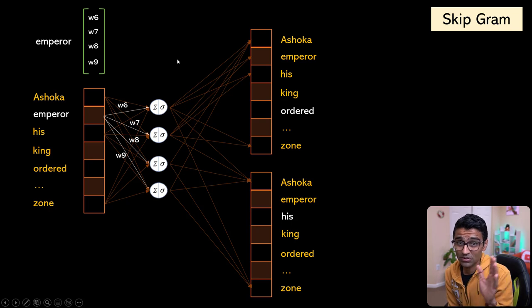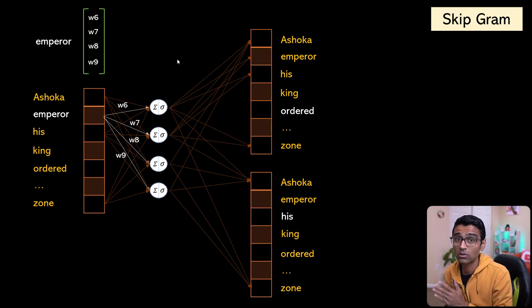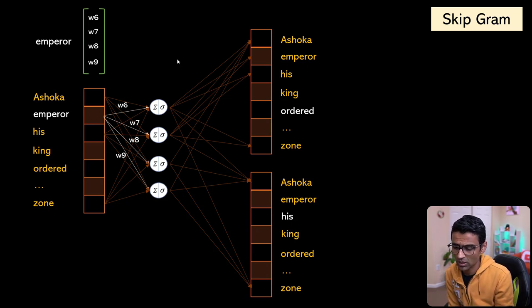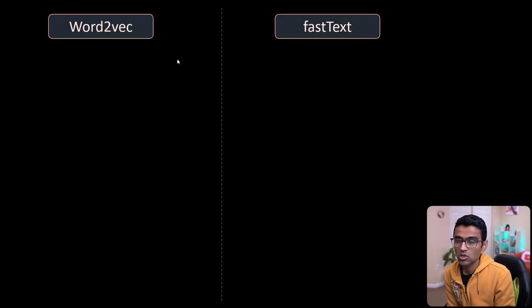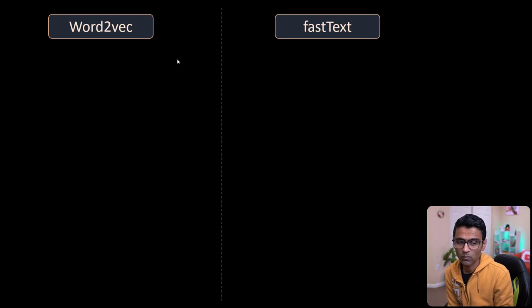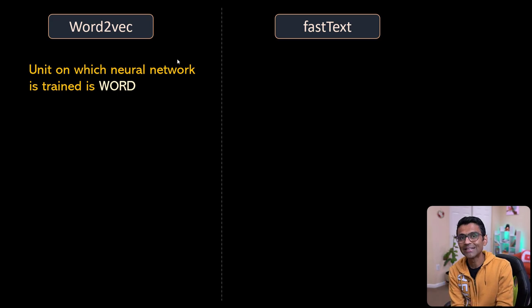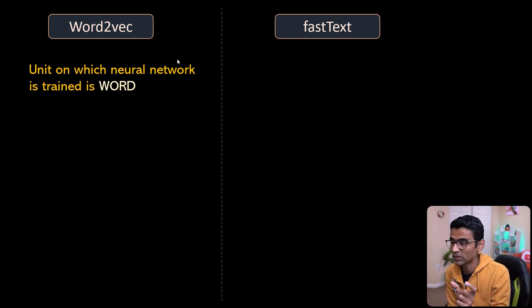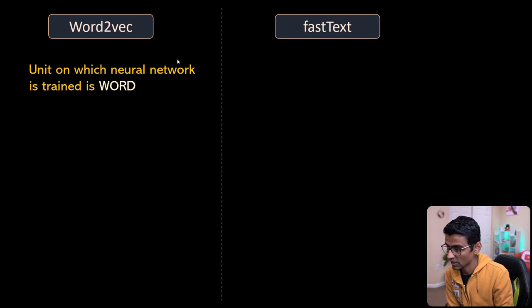I know this can be confusing, which is why you should watch the Word2Vec video — I'll provide a link in the video description. So assuming you have a clear understanding of Word2Vec, let me tell you what the difference is. Word2Vec is based on words; the smallest unit in the neural network it trains is a word.